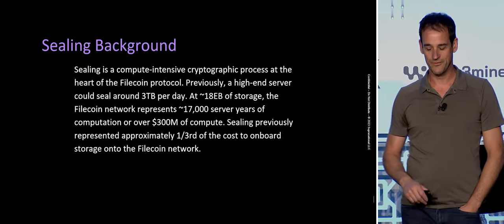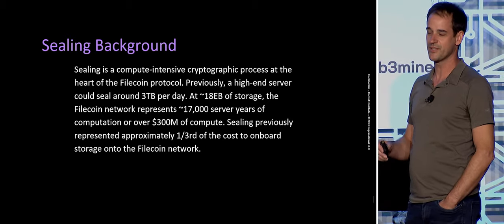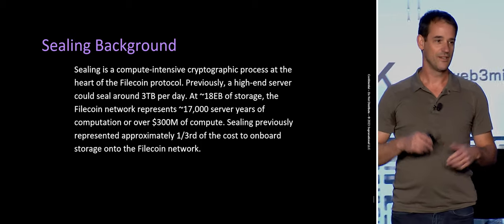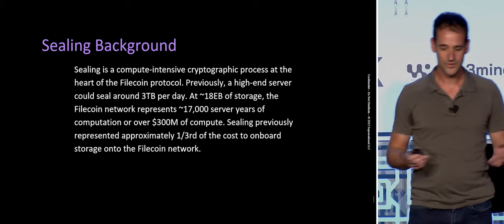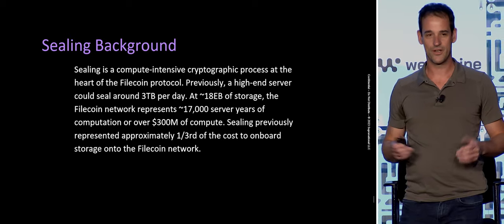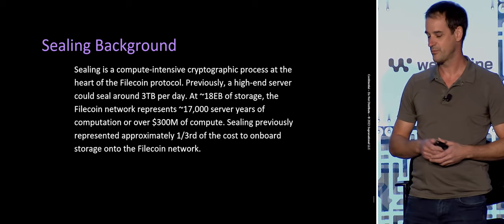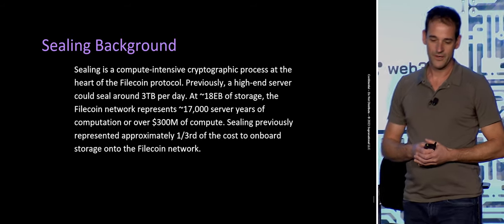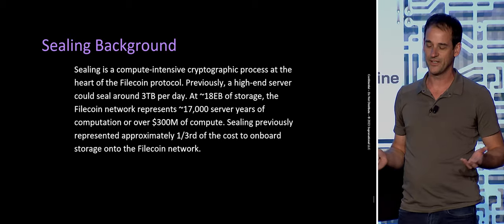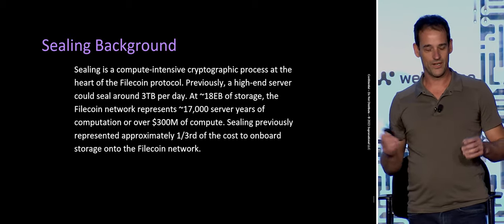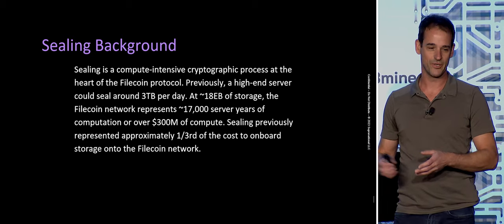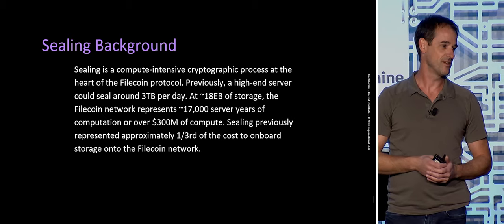Probably you all know, but for those who don't, sealing is the cryptographic process of preparing data for storage on the Filecoin network. It's computationally intensive — it takes hours to do — and it's a significant cost for storing data on the network. It's about a third of the cost in the software as it is today, prior to our optimizations. That represents a huge opportunity if we're looking to grow Filecoin and bring more data online. Can we cut that down so that the cost of storing data really boils down to the staked FIL and the disks as much as possible?